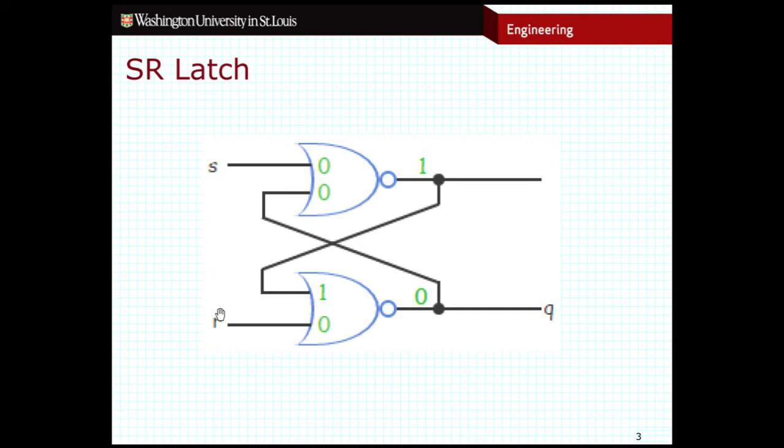Now if we look at the case where R is 1 and S is 0, we can see that the output of this NOR gate should be low because we have a high input coming from our reset bit. The output will be low.